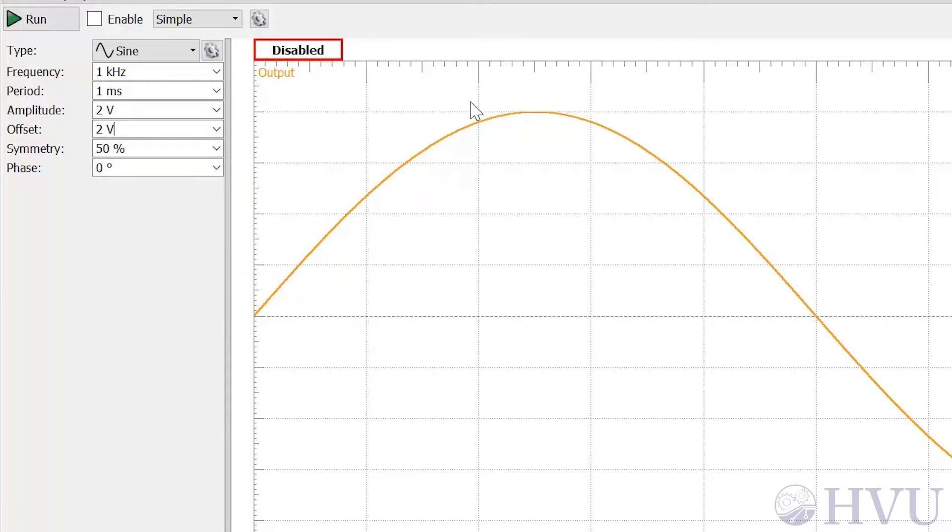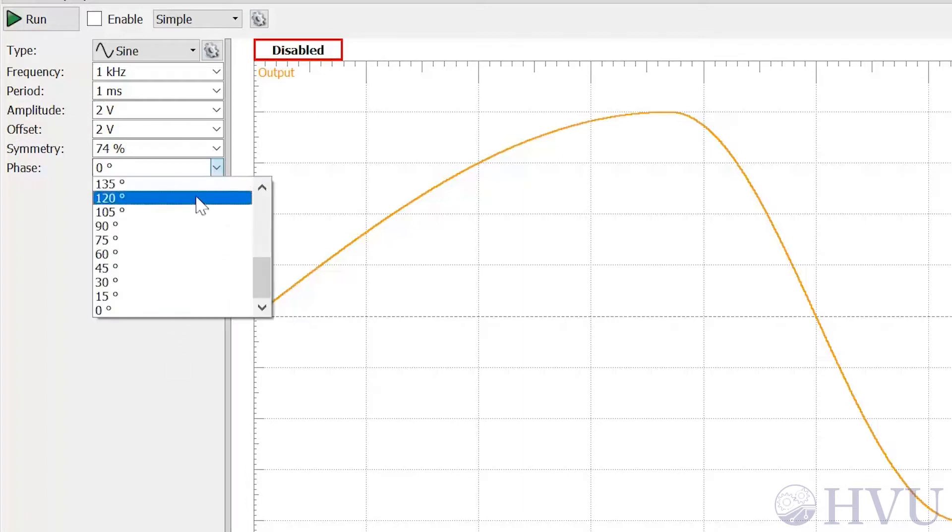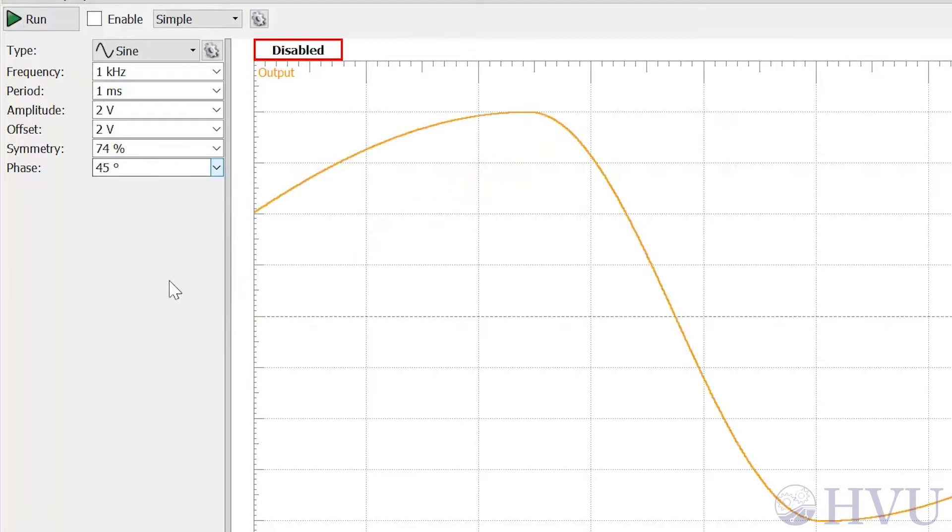One period of the signal is shown in this window, so you can check the effect of your settings. The symmetry option skews the signal, and the phase option will shift it in time.